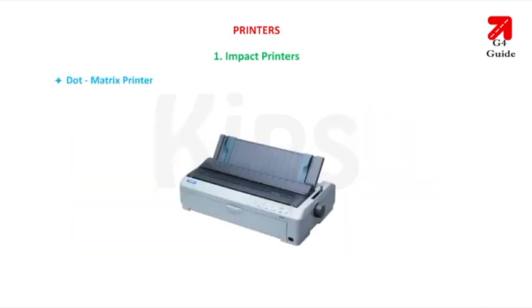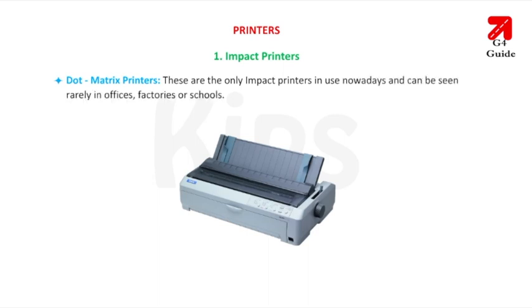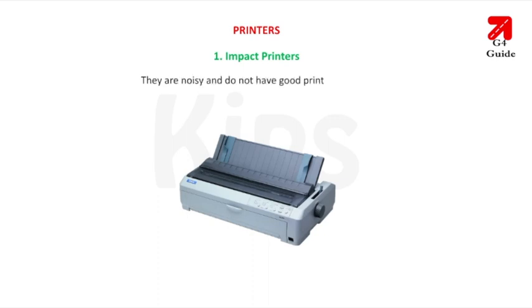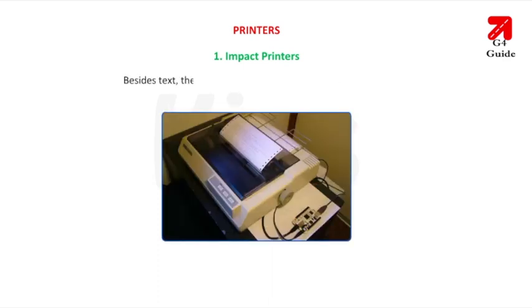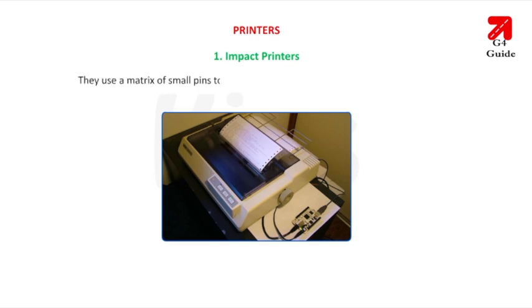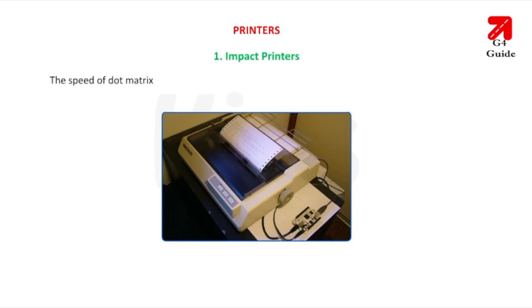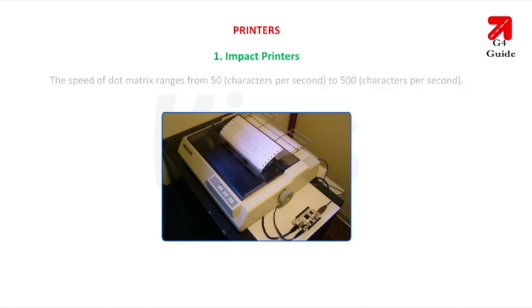Dot matrix printers are the only impact printers in use nowadays and can be seen rarely in offices, factories or schools. They are noisy and do not have good printing quality, and as a result they are losing popularity. Besides text, they are capable of printing charts and graphics. They are relatively economical. These printers have either 9 or 24 pins on the pin head and use a matrix of small pins to create precise dots on paper to form characters. The speed of dot matrix printers ranges from 50 to 500 characters per second. As they are robust in nature, they can be used in rough conditions.